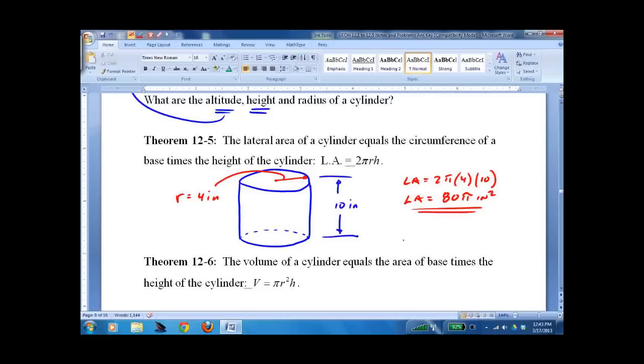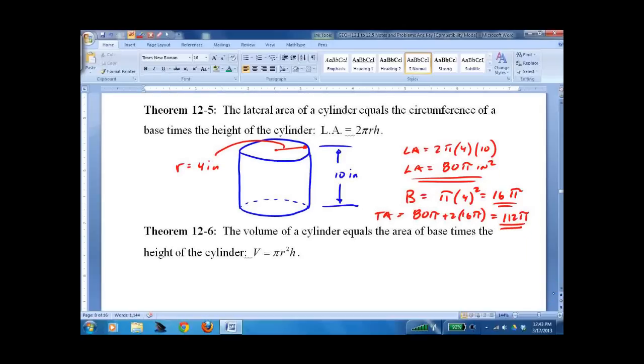What would be the total area? Well, we'd need the base area. Which would be π times 4 squared equals 16π. And then the total area would be adding them together. Except there's two bases. 80π plus 2 times 16π. 112π. That's how you do the total area. Nothing different than a regular prism, just with bases that are circles.